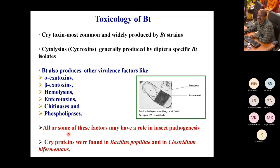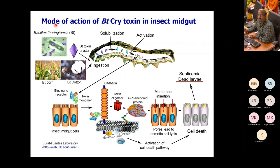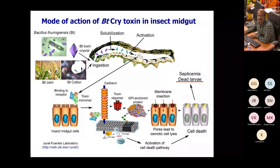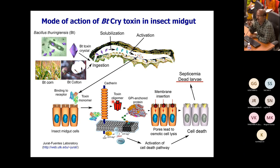There are additional virulence factors, and cry proteins are also found in other Bacillus species and Clostridium bifermentans. The mode of action of BT cry toxin involves ingestion, followed by solubilization and activation, then binding to receptors. The toxin monomer interacts with cadherin, and the toxin oligomer activates cell death pathways, causing membrane insertion, osmotic cell lysis, and finally septicemia and dead larvae.